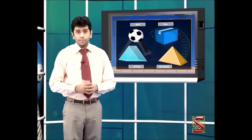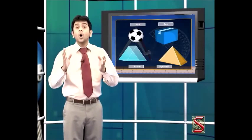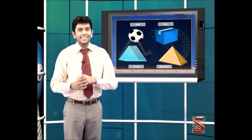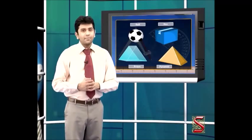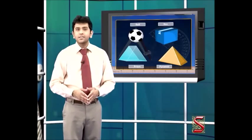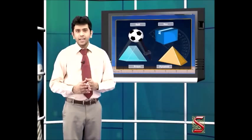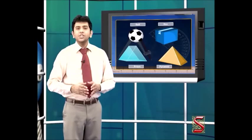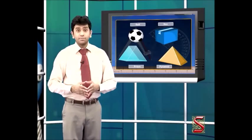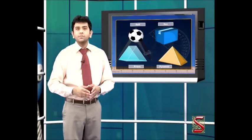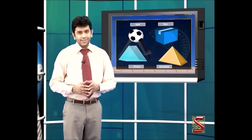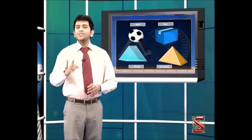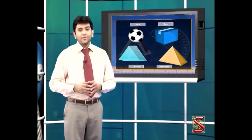So we can say that a square is a two-dimensional object and a box is a three-dimensional object. Other examples of two-dimensional shapes are triangles, circles, etc., whereas three-dimensional forms of the same shapes would be a prism, a sphere, etc. Don't worry, we will soon learn more about them.